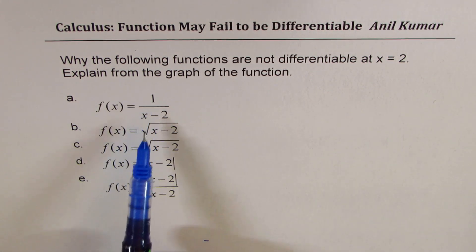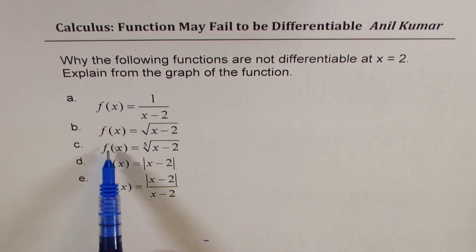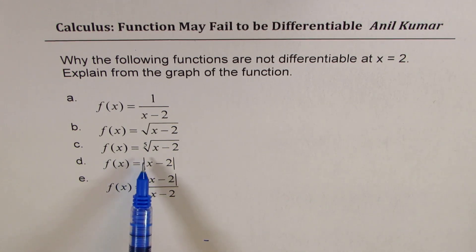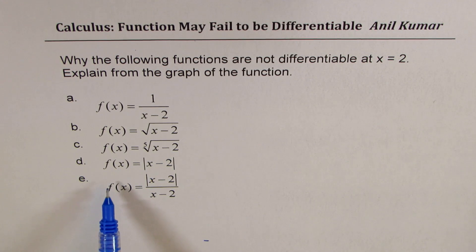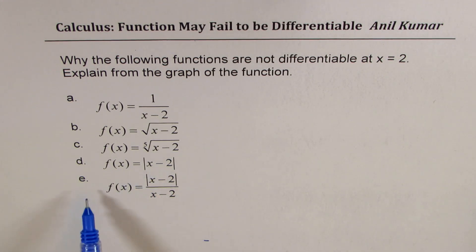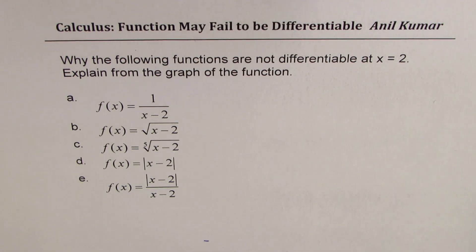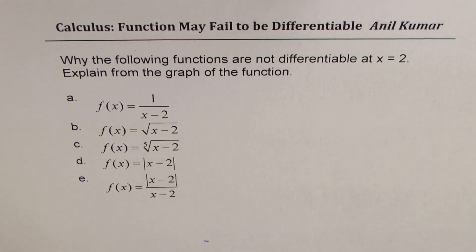One function is a reciprocal function, 1 over x minus 2. Then we have square root function, x minus 2. Then we have a radical function, fifth root of x minus 2, absolute value of x minus 2, and the ratio of absolute value of x minus 2 over x minus 2. So all these functions have been transformed from the parent function, moving two units to the right. And we'll discuss whether they are differentiable or not.